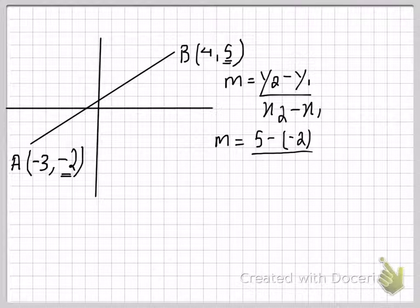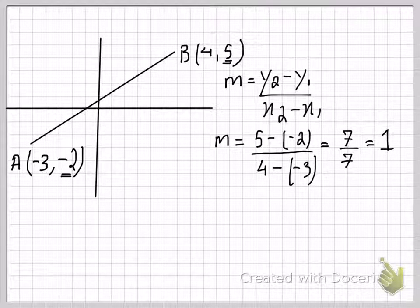Now 5 minus minus 2 will be 5 plus 2 which is 7, and 4 minus minus 3 will turn into 4 plus 3 which is also 7. Now 7 over 7 is equal to 1, so that means this line has a slope of 1.